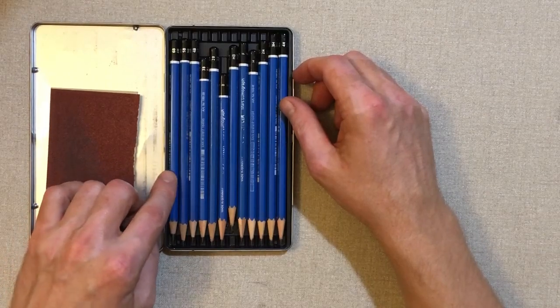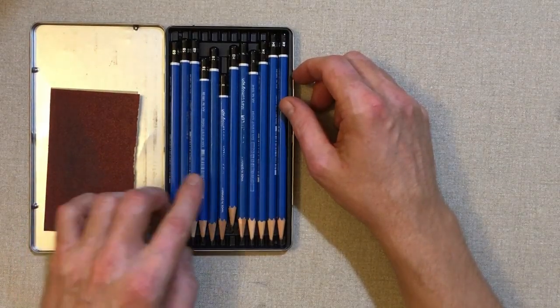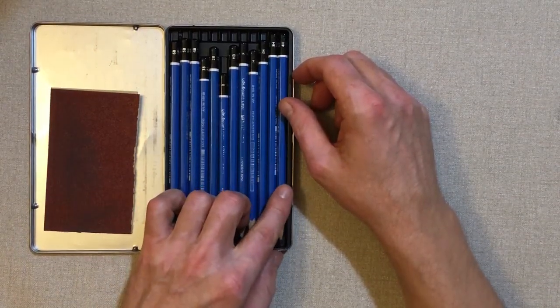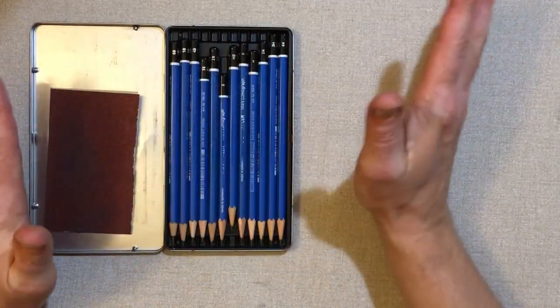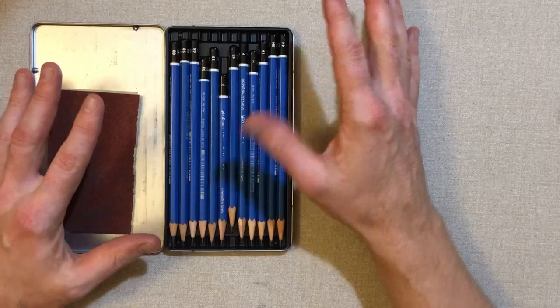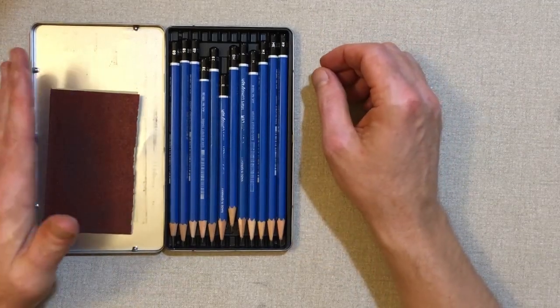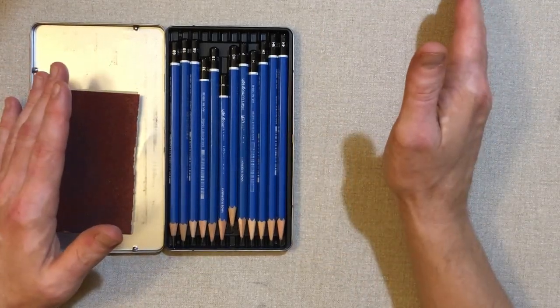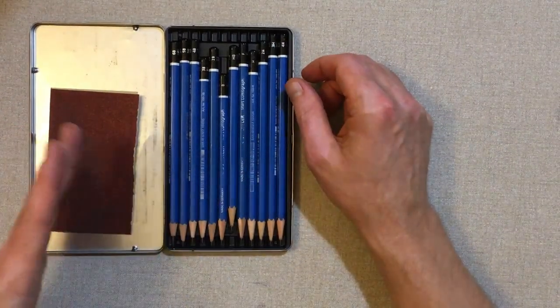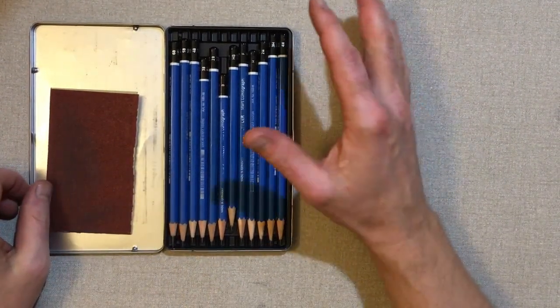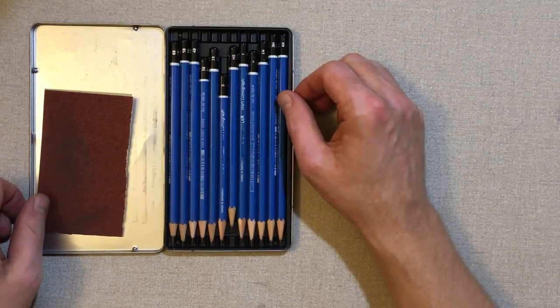And this set goes from 6B, which is a very soft dark pencil, up to a 4H, which is a harder pencil that leaves lighter marks. There is a wider range. Their full line will go everywhere from 9B all the way to 9H. So you get quite a wide range. But I really don't need any more than this. This seems to suffice for the drawing that I do.